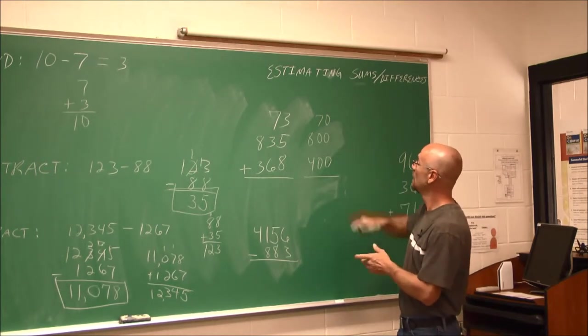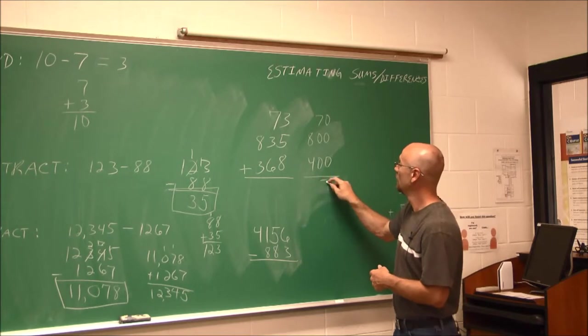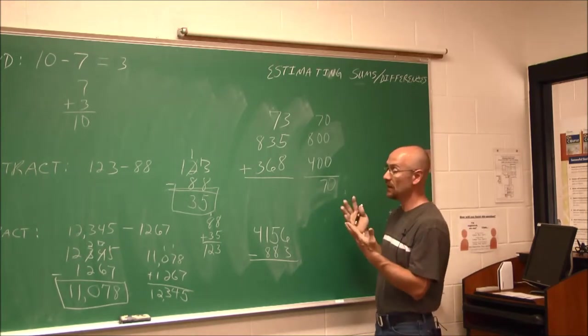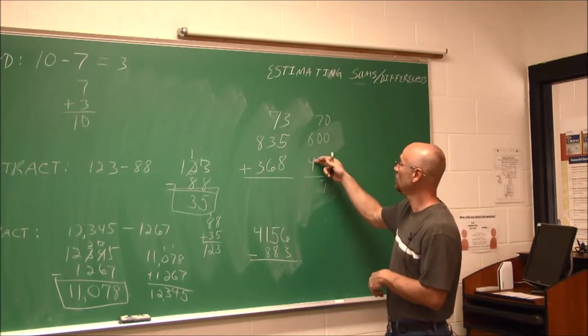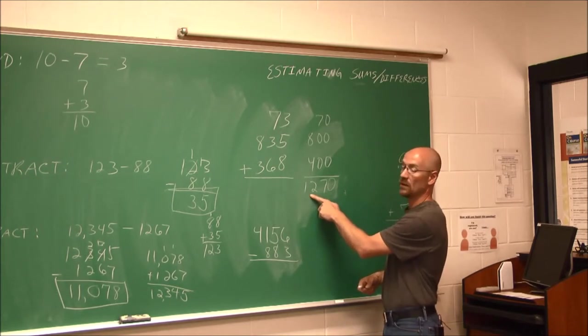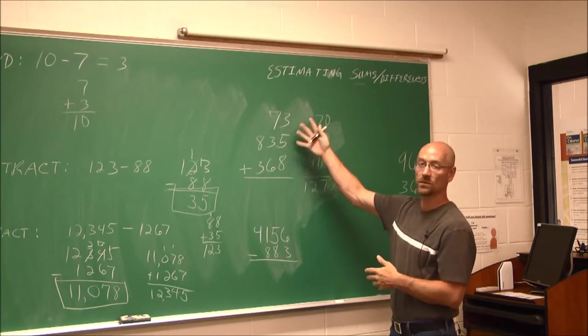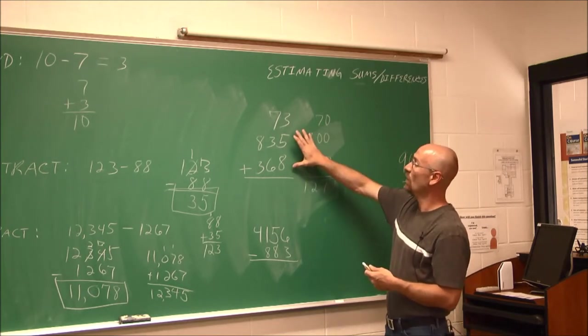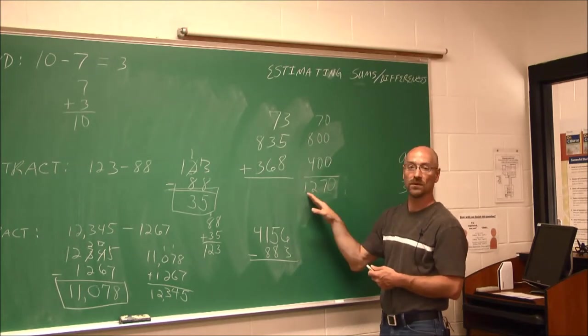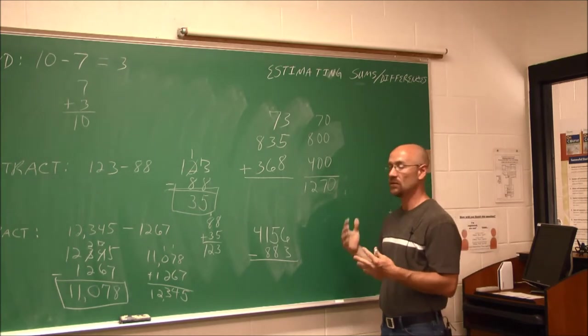So it's closer to 400 than it is 300. And now, if I add these up, I can add the ones. There are no ones. There are 7 in the tens place plus two zeros. It doesn't change it. It identifies that 7, that identity property. And 8 and 4 is 12. So this value is approximately 1,270, which is pretty close to what the sum is. And if you want, on your own, you can go ahead and pause the video, sum these up, and see how close this is. Relatively speaking, it's pretty close to 1,270.